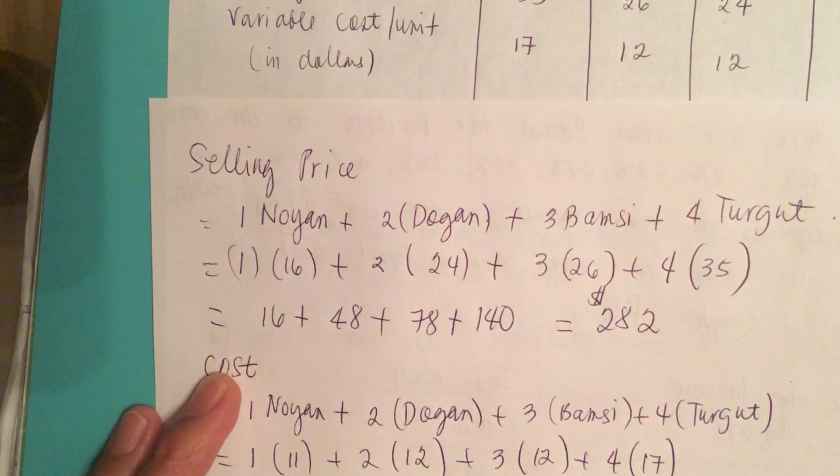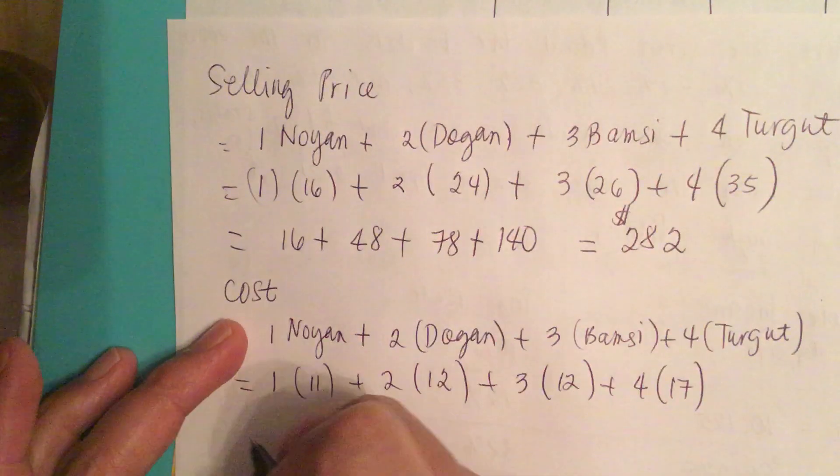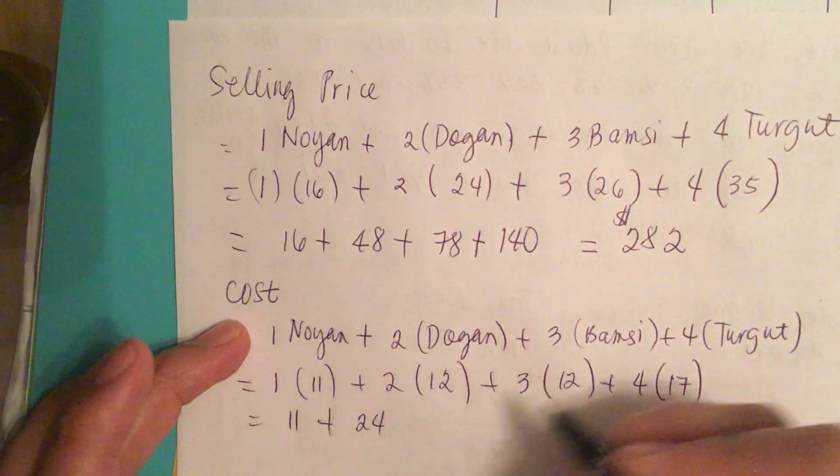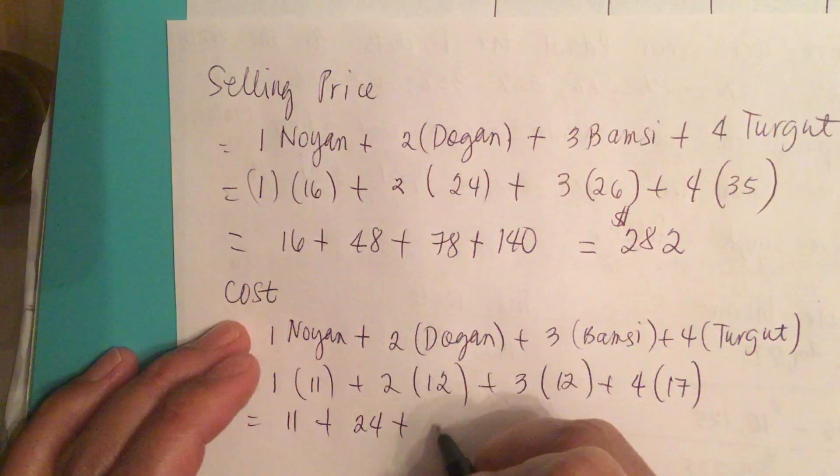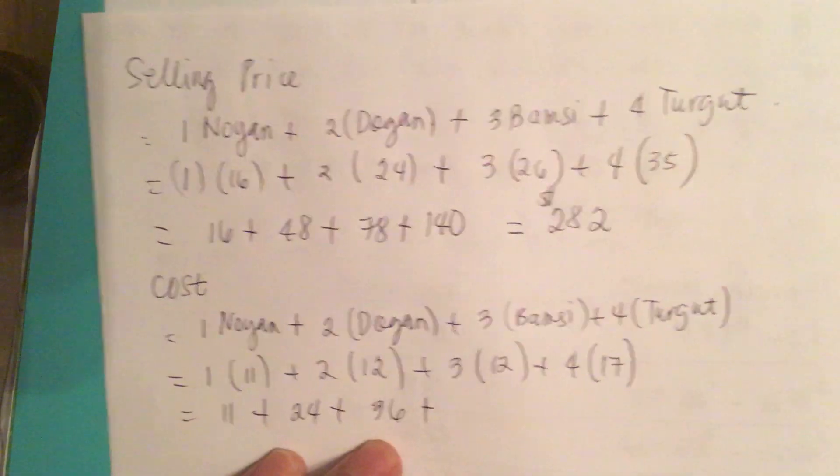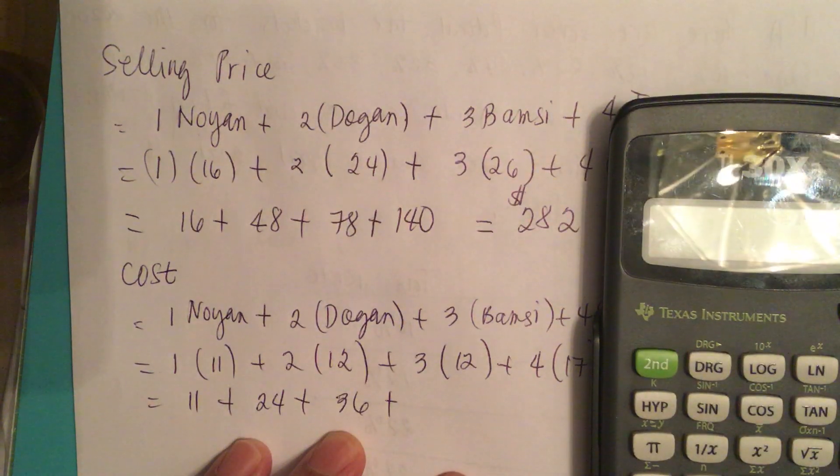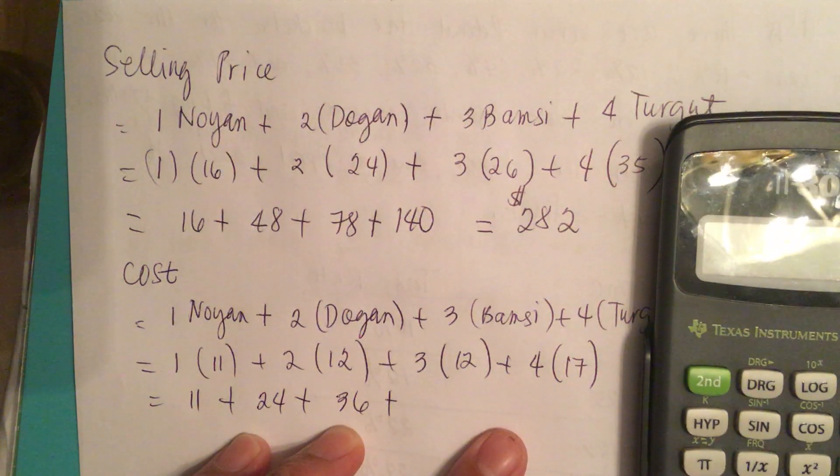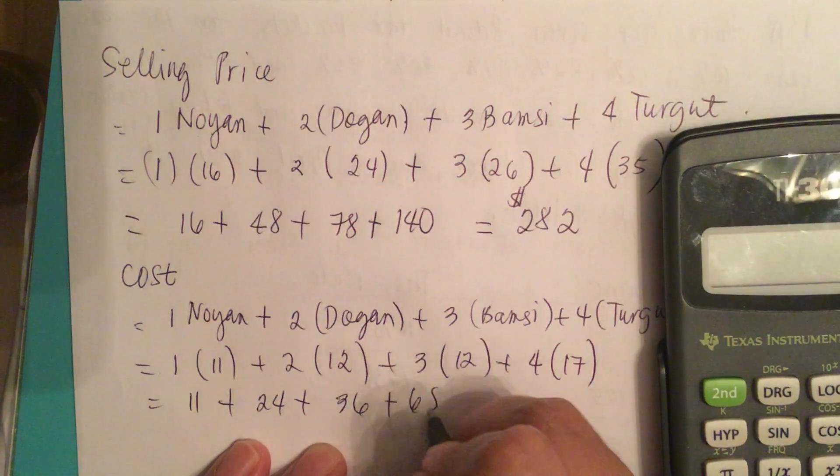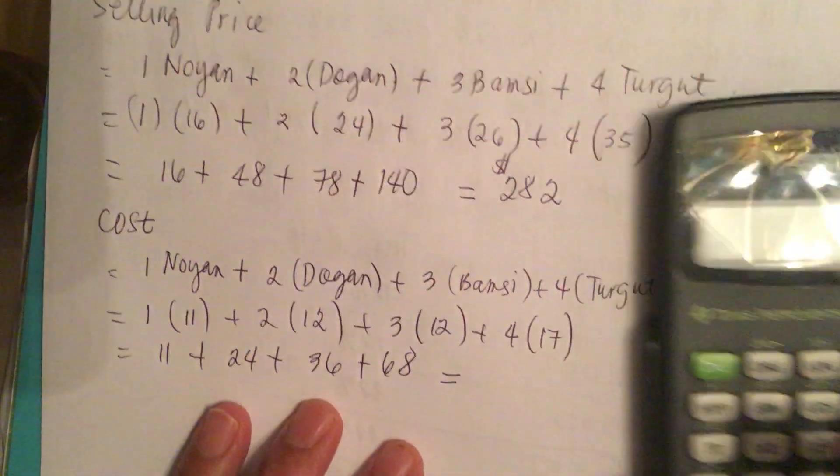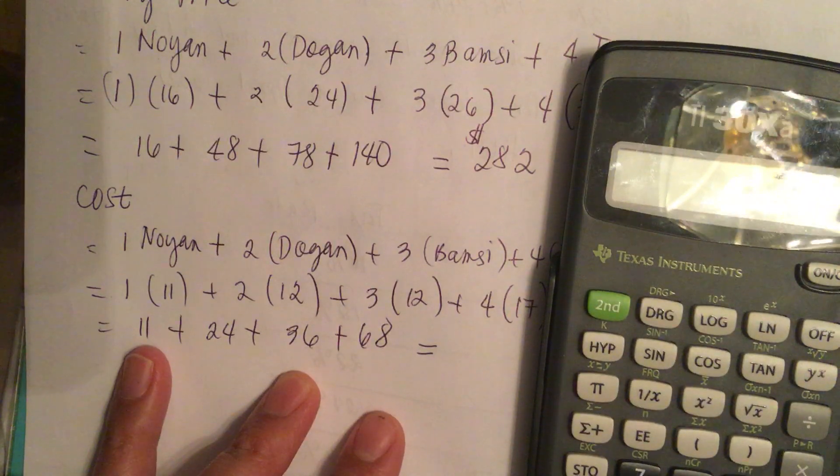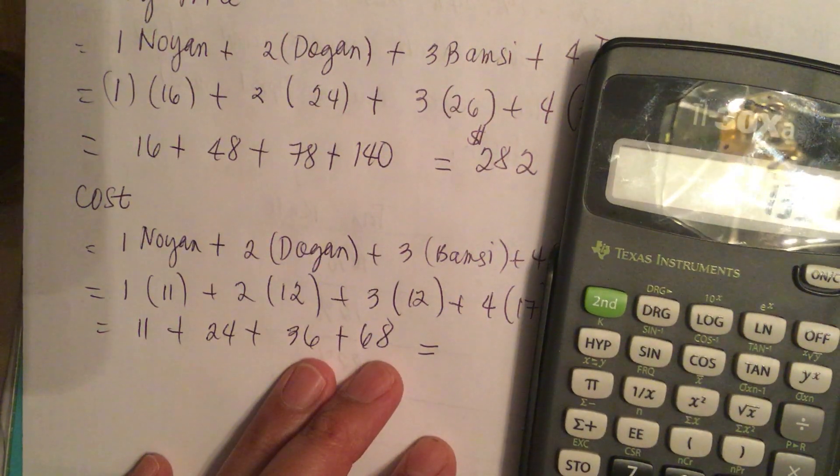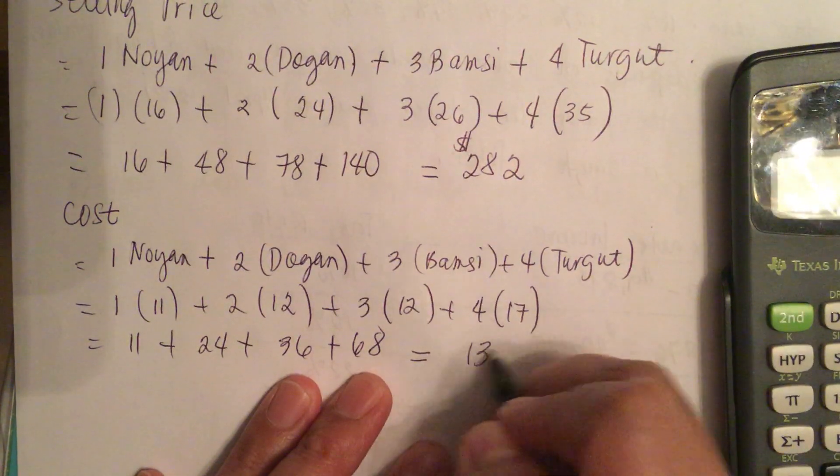Now this is equal to 11 plus 24 plus 36 plus 68, equals to $139.